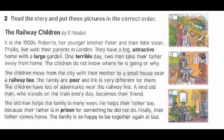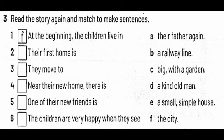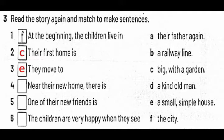After reading, we have to order the pictures. The first picture is picture B. The second picture is picture 2. The third picture is picture A. After reading the story, we have to read it again and match to make sentences. Number one is done for you: at the beginning, the children live in the city. Number two: their first home is big with a garden. Number three: they move to a small, simple house. Number four: near their home, there is a railway line. Number five: one of their new friends is a kind old man. Number six: the children are very happy when they see their father again.